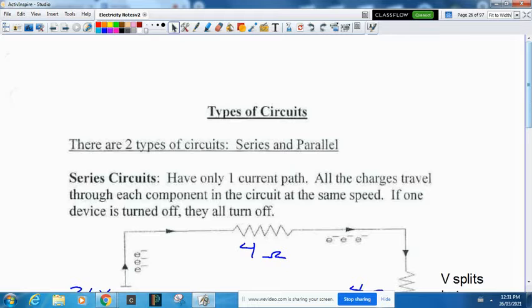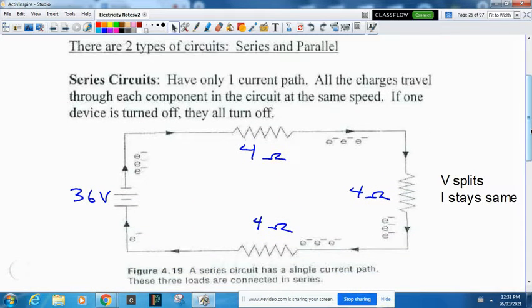A series circuit can have only one current path. All the charge travels through each component of the circuit at the same rate. If one device is turned off, they all turn off.